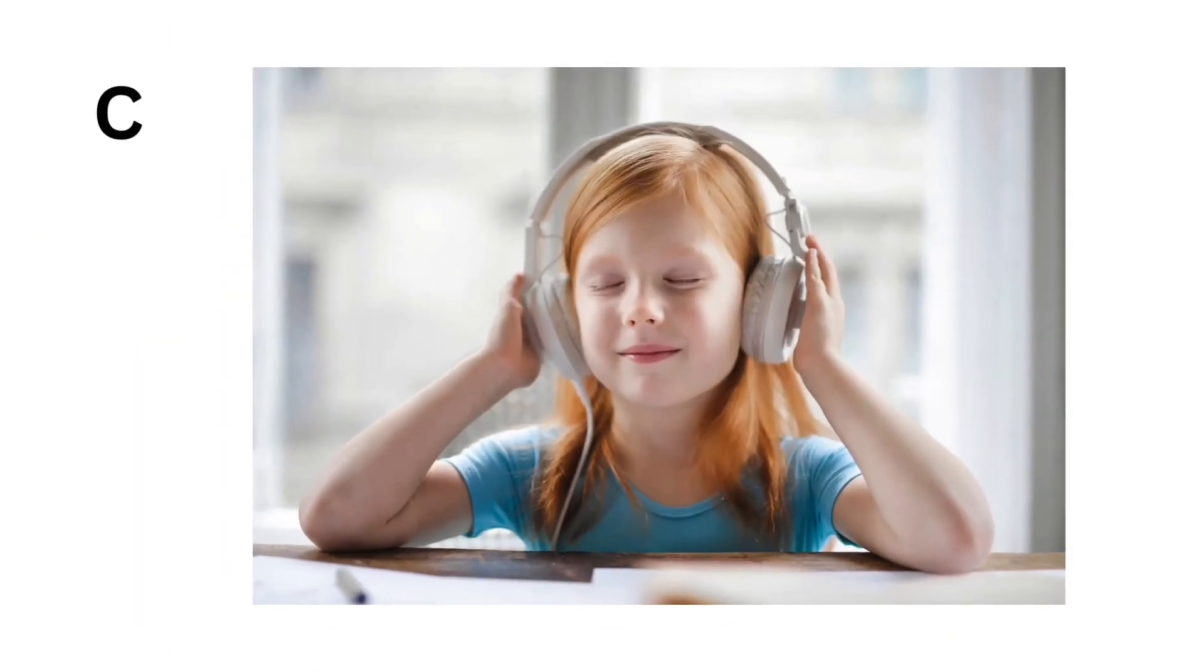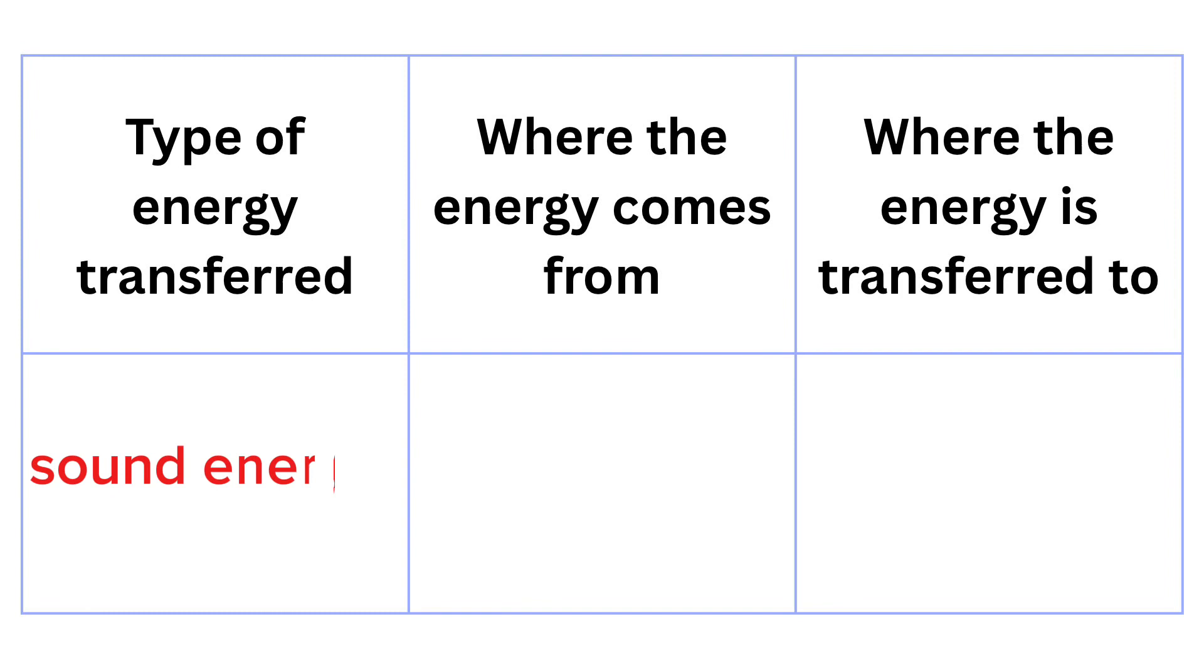Let's look at picture C. Picture C shows a person listening to music with headphones. The music player or phone uses electrical energy from its battery. This energy is transferred to the headphones, which converts it into sound energy that the person can hear. So the energy comes from the headphones and goes into the person's ears as sound.